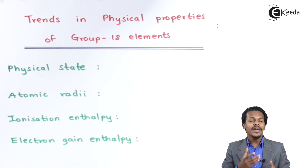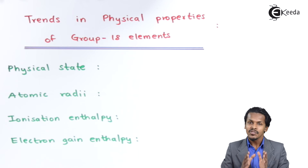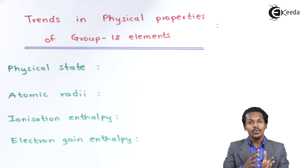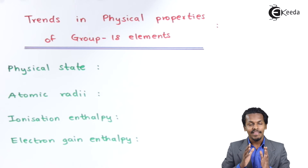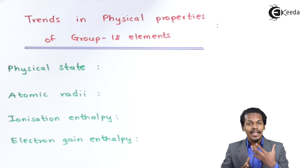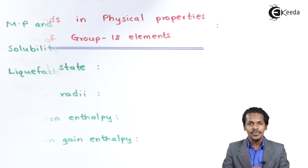Regarding electron gain enthalpy: group 18 elements are noble gases, so they neither need to gain an electron nor can they easily lose one. Therefore, removing or gaining an electron is very difficult, and that is why noble gases have a very large positive electron gain enthalpy.